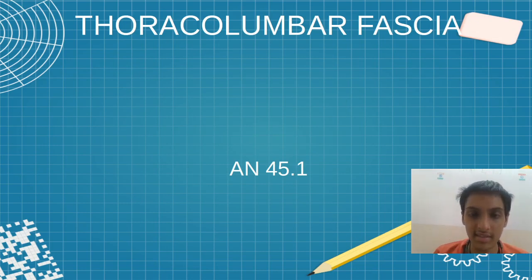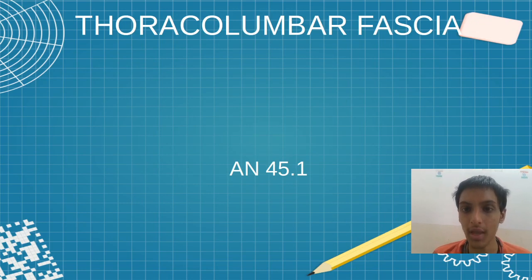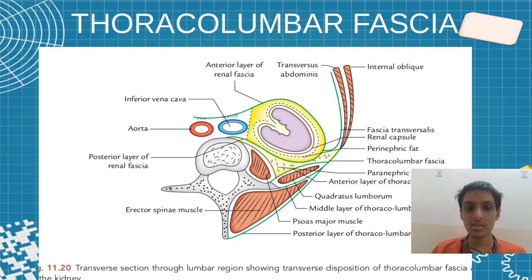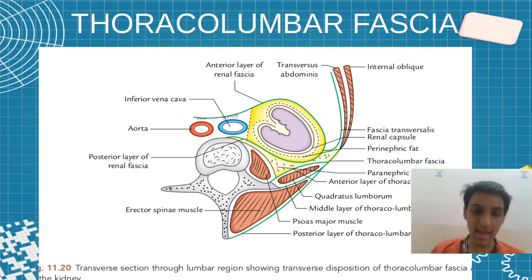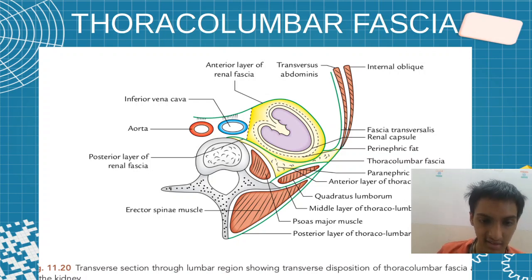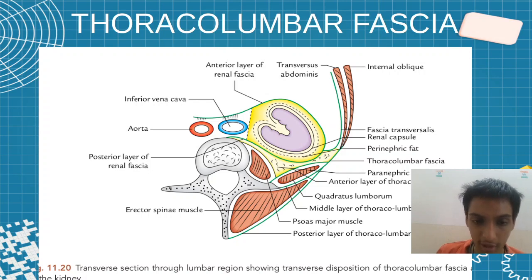Hello friends, in this video we will talk about thoracolumbar fascia. This thoracolumbar fascia is going to blend the erector spinae muscle. Let's see what we are seeing in the thoracolumbar fascia.